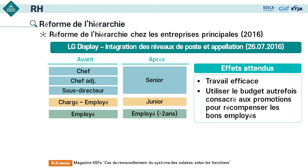Quand on introduit cette hiérarchie, les employés font des efforts pour monter à des niveaux supérieurs, mais cela baisse la chance de promotion parce qu'il y a trop de candidats. Avec la simplification des niveaux, les employés mettent moins d'importance à la promotion. Chez LG, il n'y a que trois promotions — LG a changé la direction de la passion des employés de la promotion à la prime pour bonne performance, en individualisant la prime pour chaque employé selon sa performance.